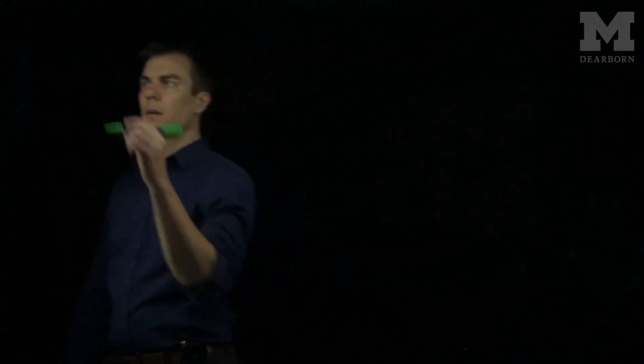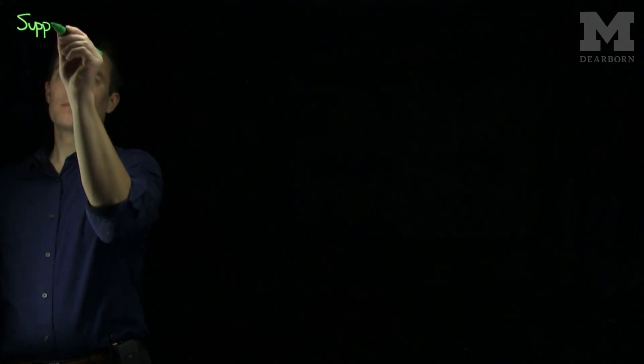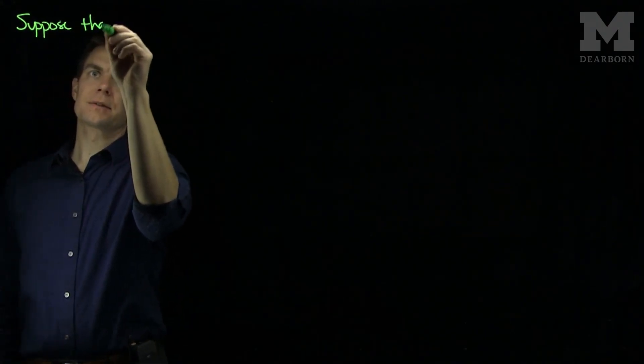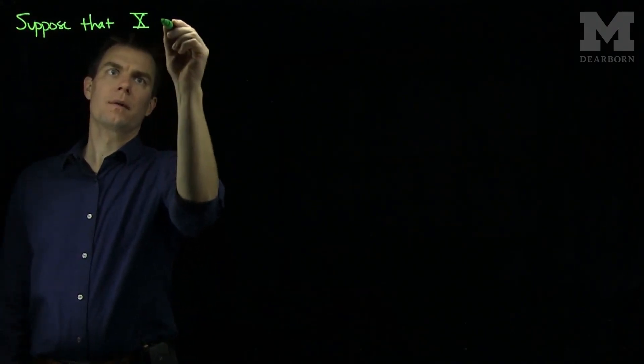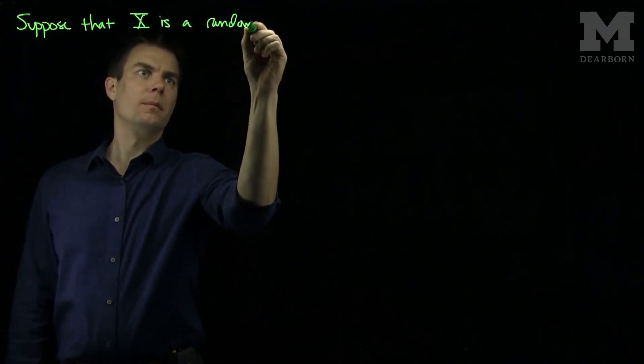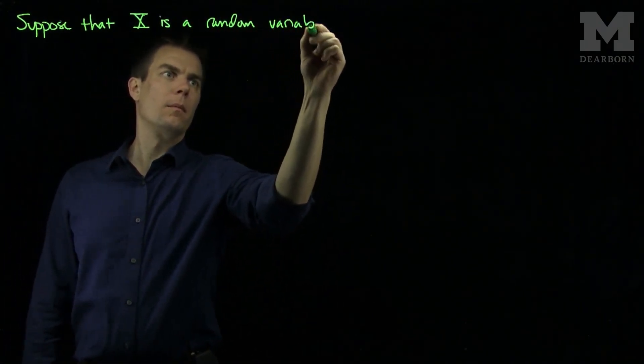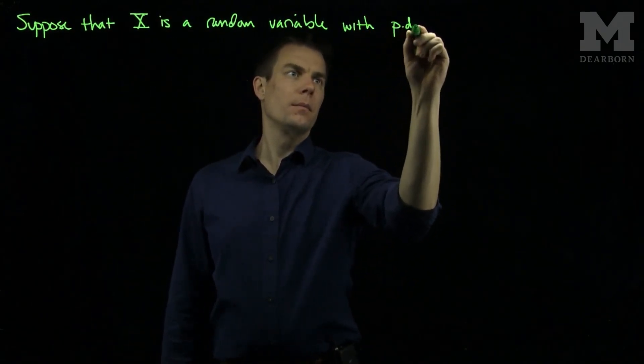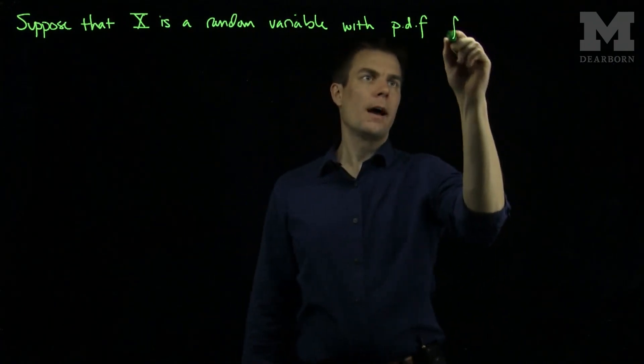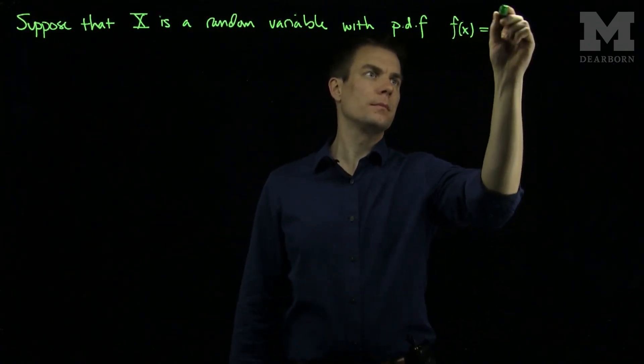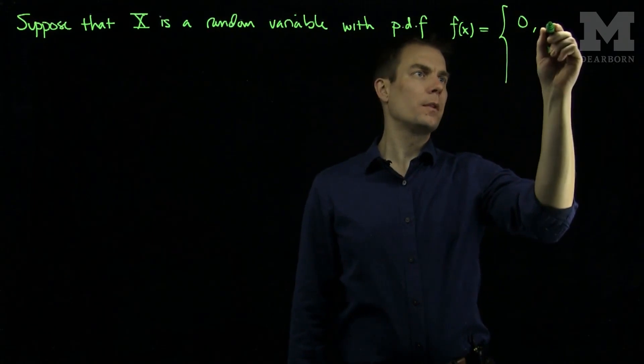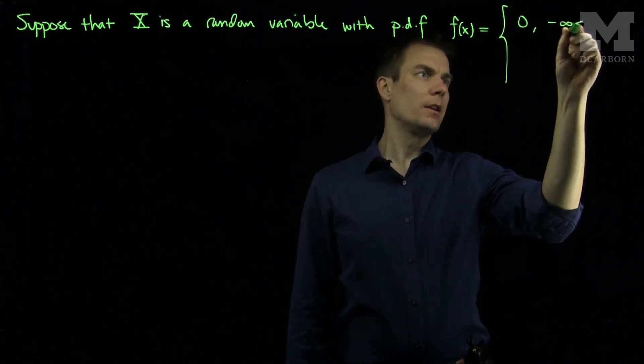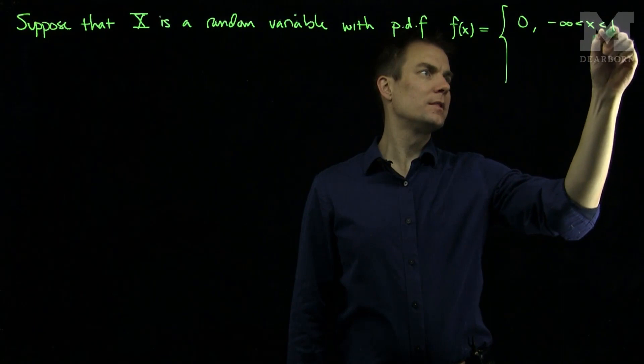Hello students, in this video we'll see an example of how to find the median value of a random variable. Suppose that x is a random variable with pdf f defined to be 0 if we are between negative infinity and 10,